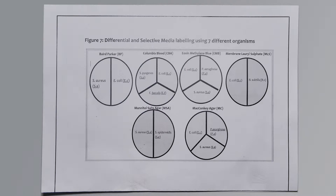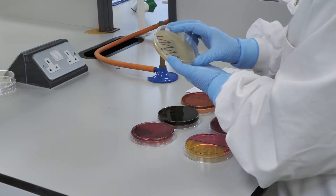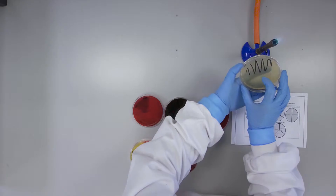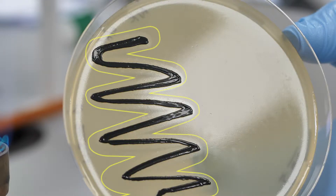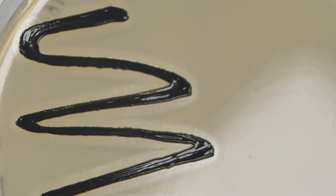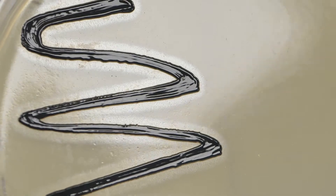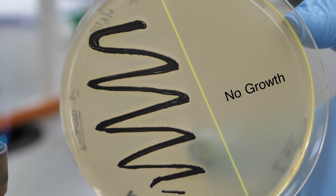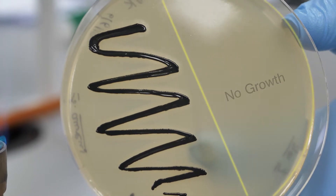On Baird Parker Agar, growth of coagulase positive Staphylococcus takes on a very distinctive black colour and the colony is surrounded by a clear zone. Coagulase negative colonies will have no clear zone. Note, when there is no growth on one side of the plate, the particular strain of bacteria has been inhibited.